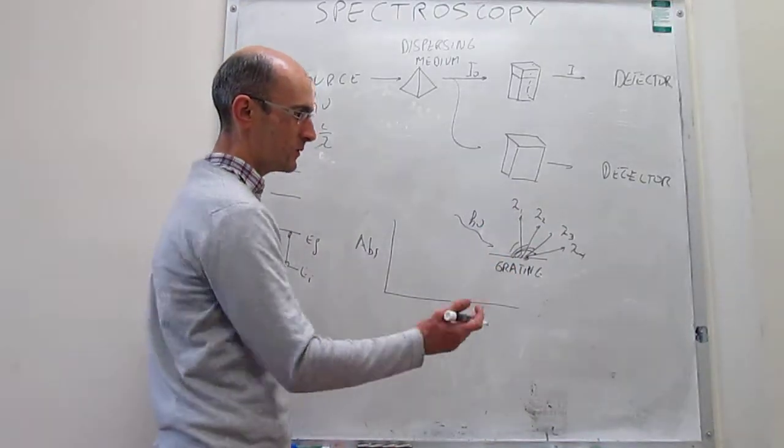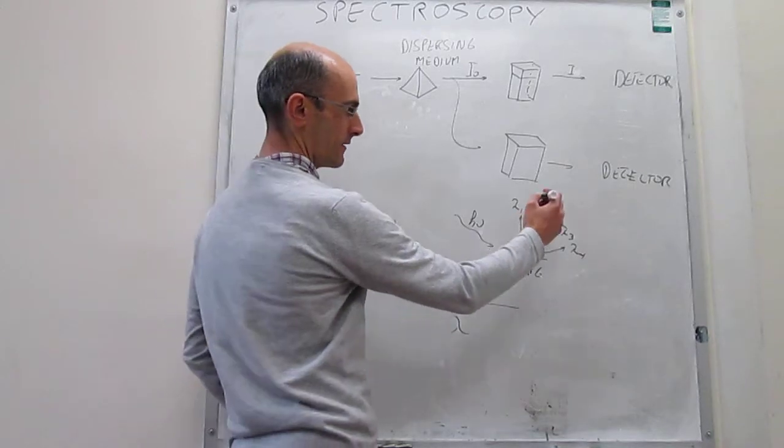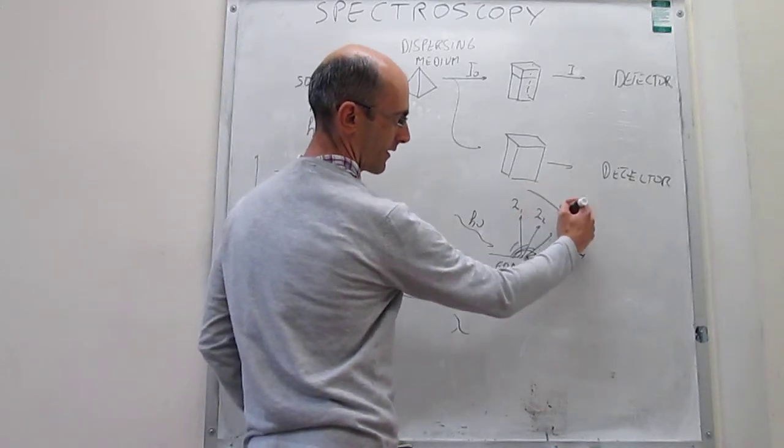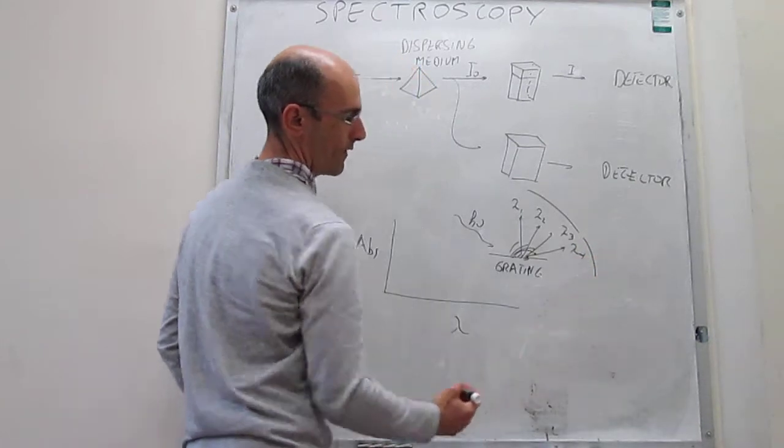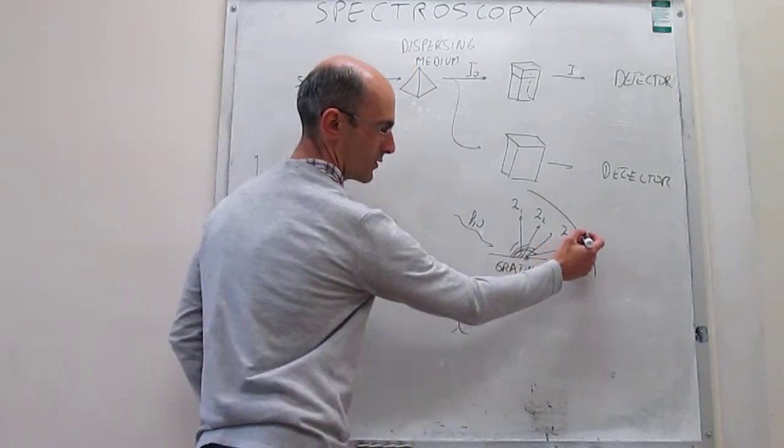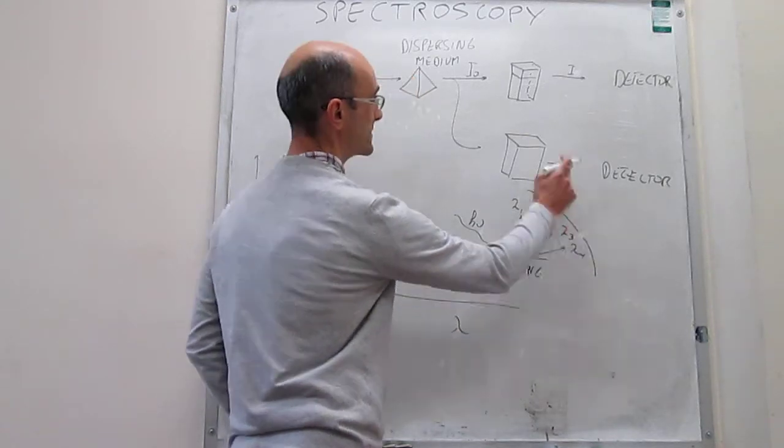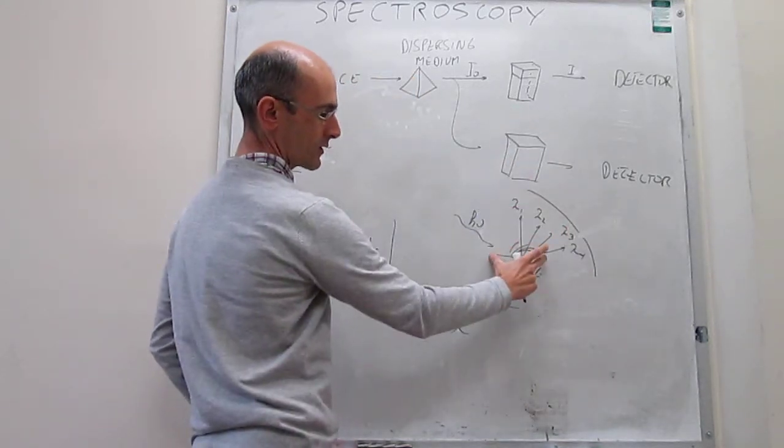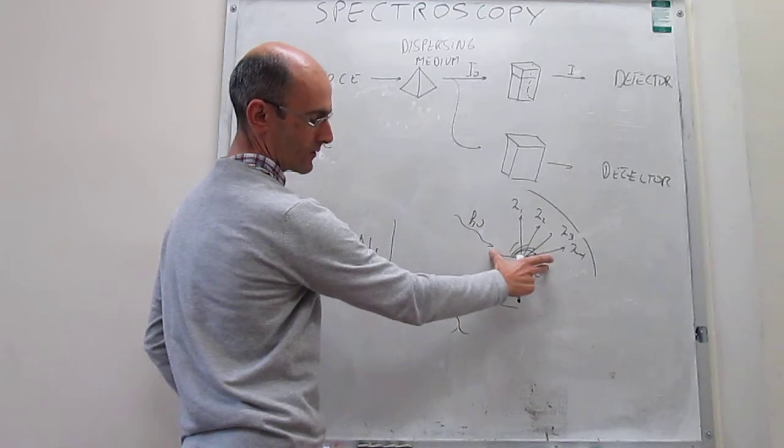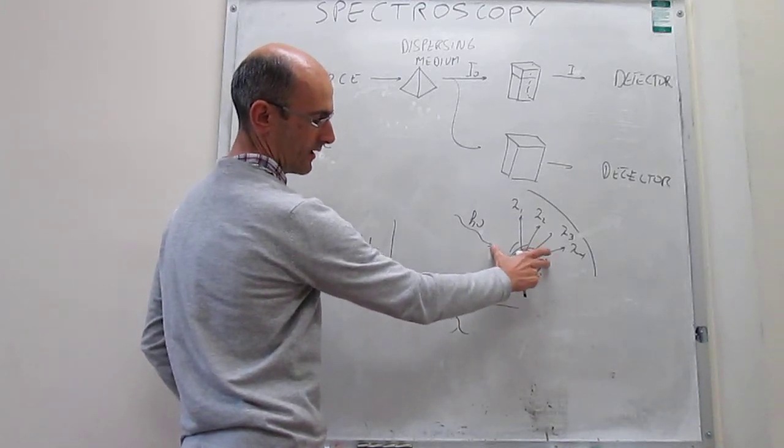So then, the way to select one at a time is fairly simple. You just come here and block that particular angle so that only the wavelength at this angle is able to escape and then hit the sample. And then you can take this grating and rotate it.